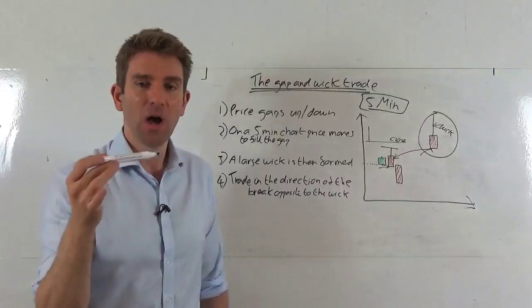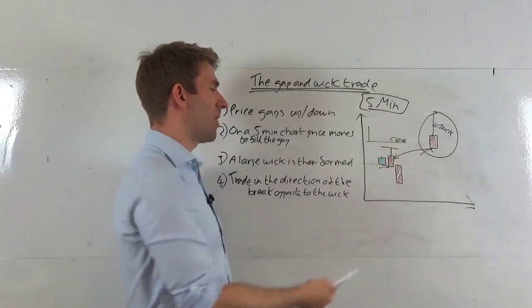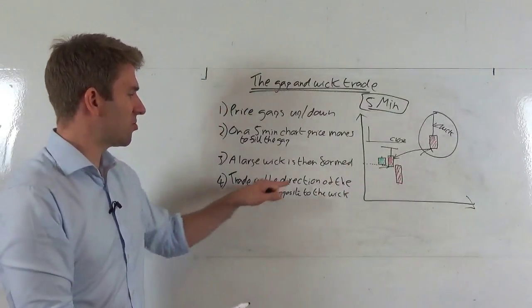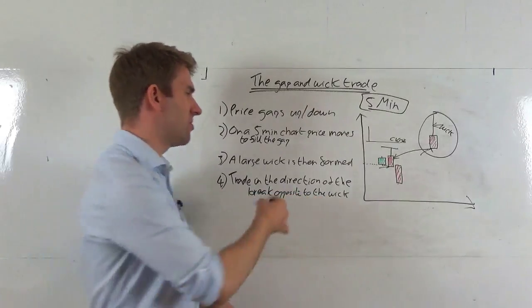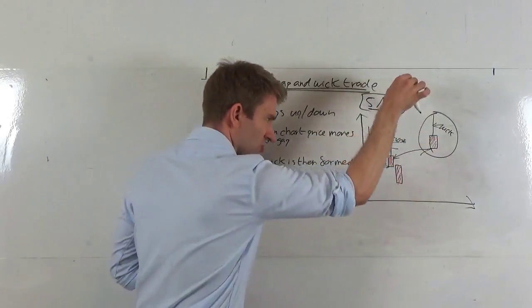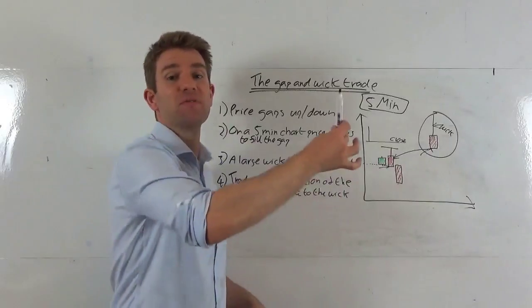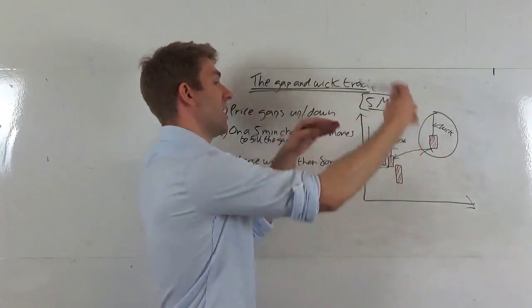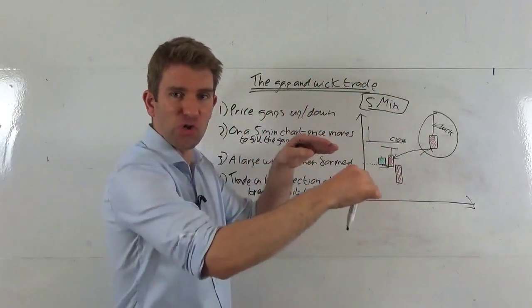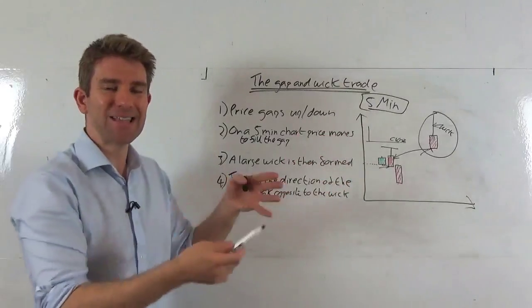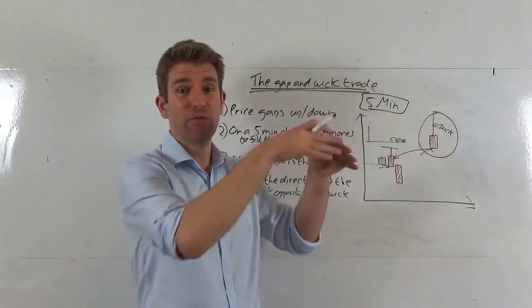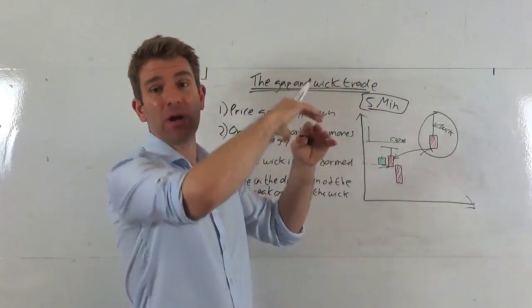So you're trading the direction of the break opposite to the wick, just to confirm. So the wick is to the upside, we're trading on the short side. So the gap fill doesn't fill to the upside, the wick forms on the higher candle, we're trading short because we're trading against that gap fill. If we were looking for a gap higher and we kind of push to fill the gap lower, push to fill the gap, we didn't, we've got the wick to the downside, we're going to go long.